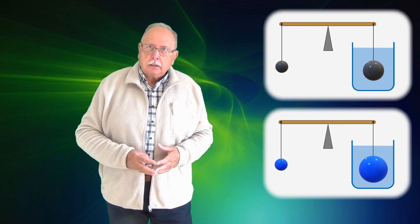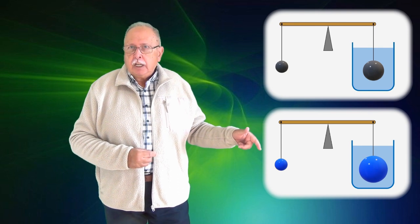Deci calculele arată că bilele din primul desen au densitatea mai mare decât bilele din al doilea desen, ceea ce înseamnă că bila din stânga din primul desen este mai grea decât bila din stânga din al doilea desen. Adică bila neagră este mai grea decât bila albastră.